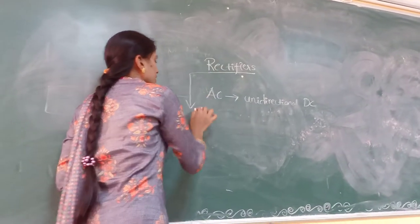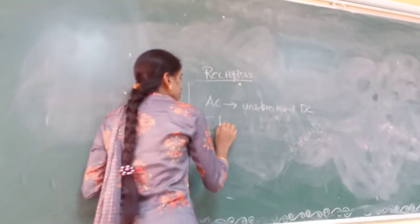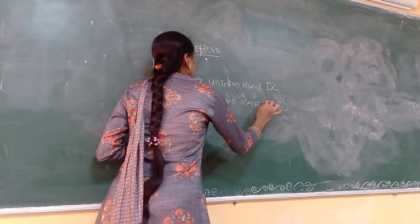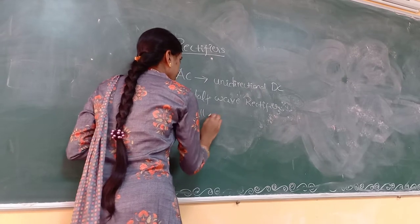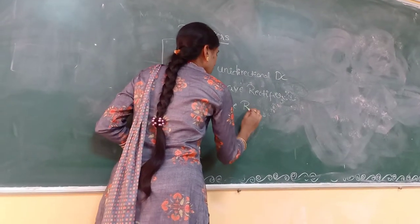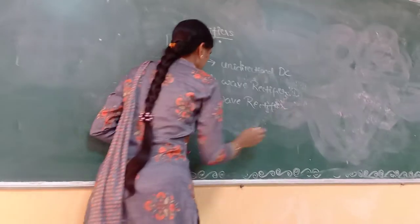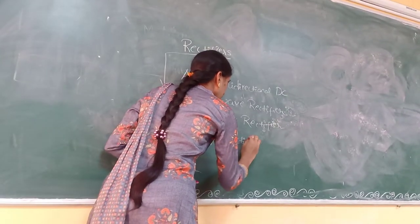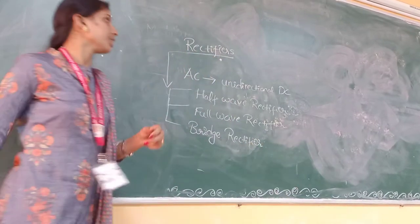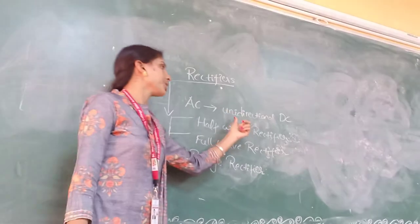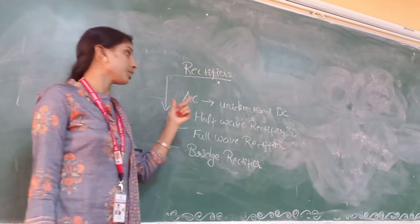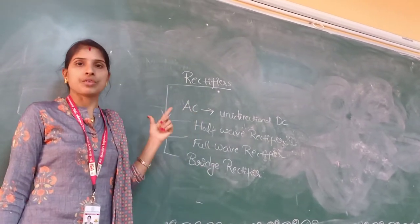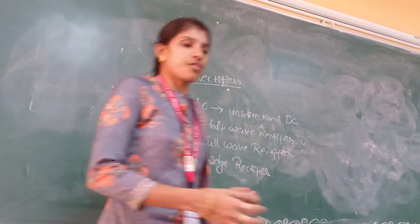The classification of rectifiers — there are three types. First one is the half-wave rectifier. Second is the full-wave rectifier. And third is the bridge rectifier. A rectifier converts alternating current into unidirectional DC, but it does not convert into pure DC — it converts to pulsating DC.